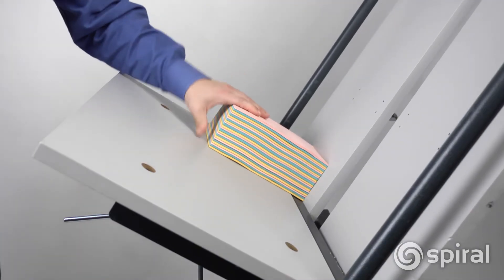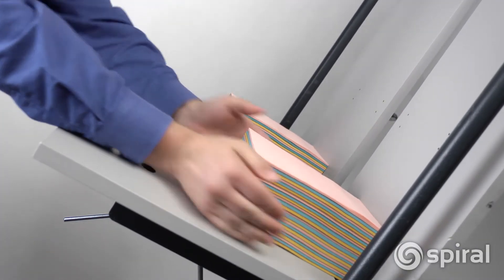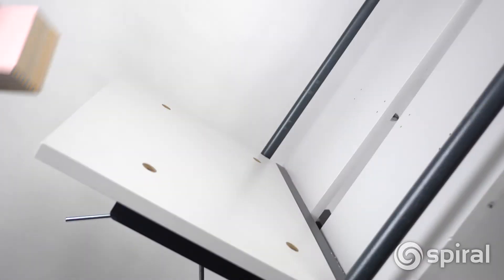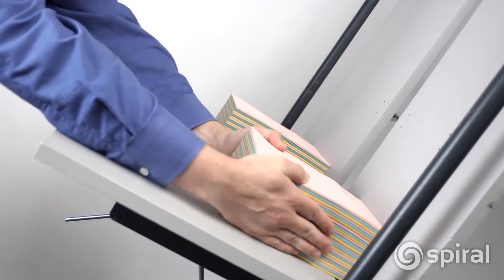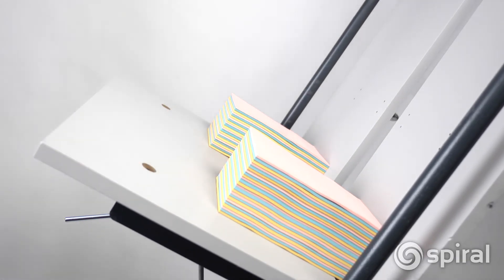The table slant allows gravity to align stock and keep it square. Load up to 15,000 eight and a half by 11 sheets of 20-pound bond, or even more with smaller sheets. Two: clamp.